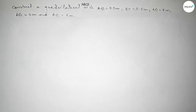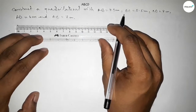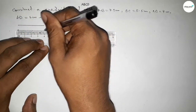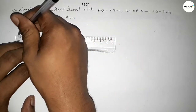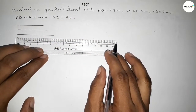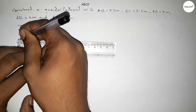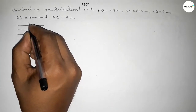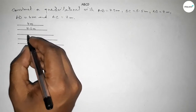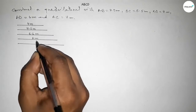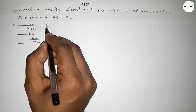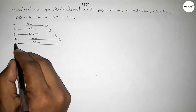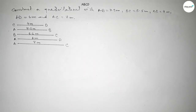AC equal to 7 centimeter. So let's start the video. First of all we have to draw all the sides. Drawing a line of length 4 centimeter, then 4.5 centimeter, next 5.5 centimeter, then 6 centimeter, and last 7 centimeter. So this line is CD, this is AB, this one BC, this one AD, and this one AC.